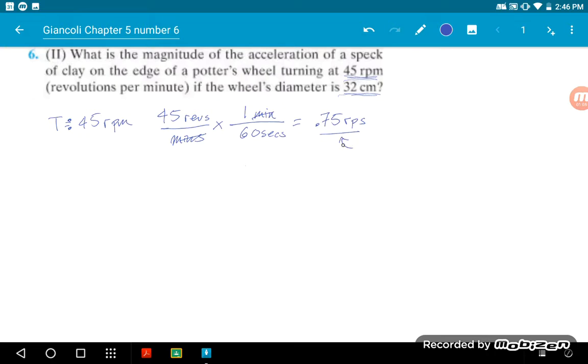But wait, is this a period or is this a frequency? Revs per second, that's a frequency, right? This is our F. And we know that a period is equal to 1 over the frequency. So that's going to be 1 over 0.75. So that becomes 1.33 seconds. That's our actual period.